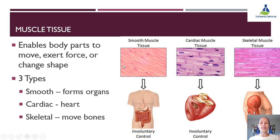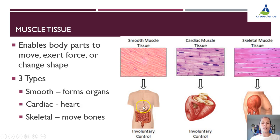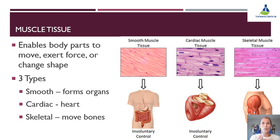Within muscle tissue we have three main types: smooth muscle tissue, cardiac, and skeletal. Smooth muscle tissue forms our organs — our stomach, our intestines — and the key thing here is it's involuntarily controlled, which means we don't have to think about it. You don't have to sit there after lunch and tell your stomach to squish, squeeze, turn, and move — it does it involuntarily. All smooth muscles work that way.